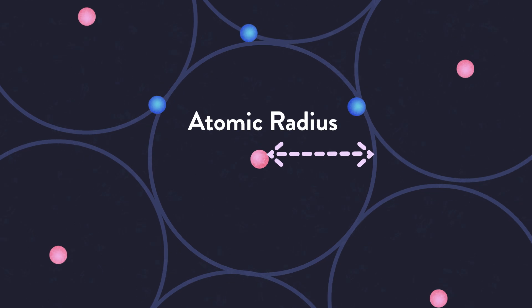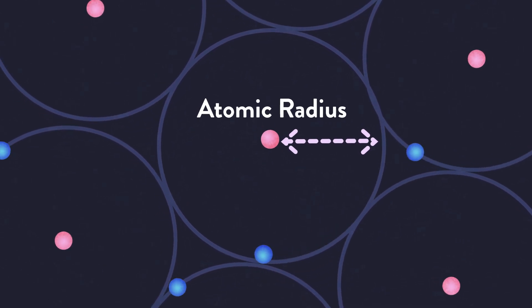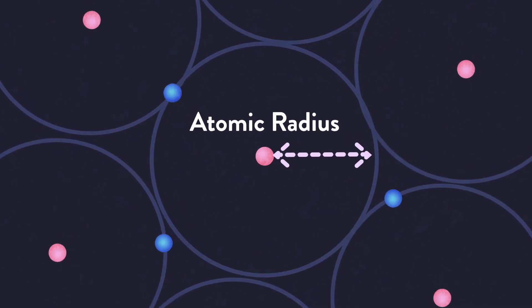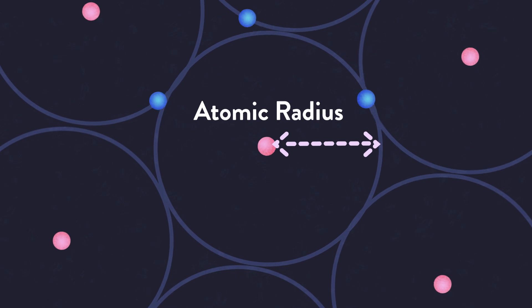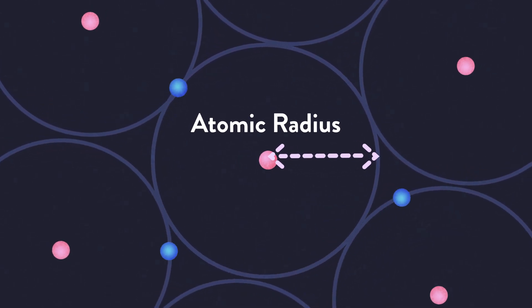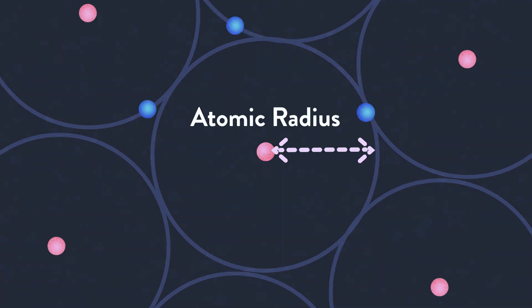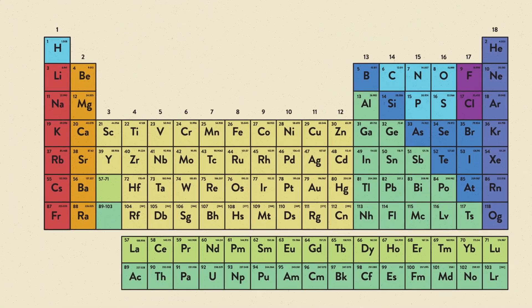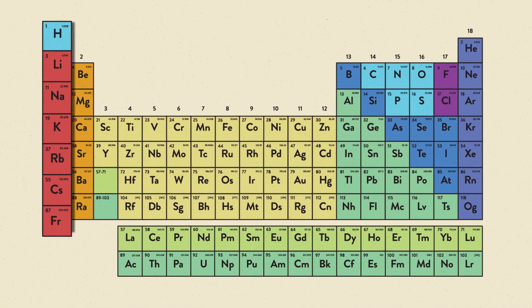The atomic radius is a measure of the typical distance from the center of the nucleus to the boundary of the surrounding cloud of electrons. It's affected by the number of protons and electrons that make up an atom. Both change in predictable ways throughout the periodic table. Let's take a look at group trends first.